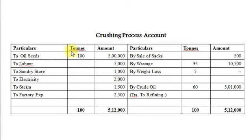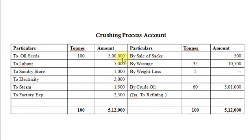Particulars, tons, amount — on both debit and credit sides. On the debit side, first we will introduce oil seeds: 100 tons at Rs. 5000 per ton, so total amount Rs. 50,000.